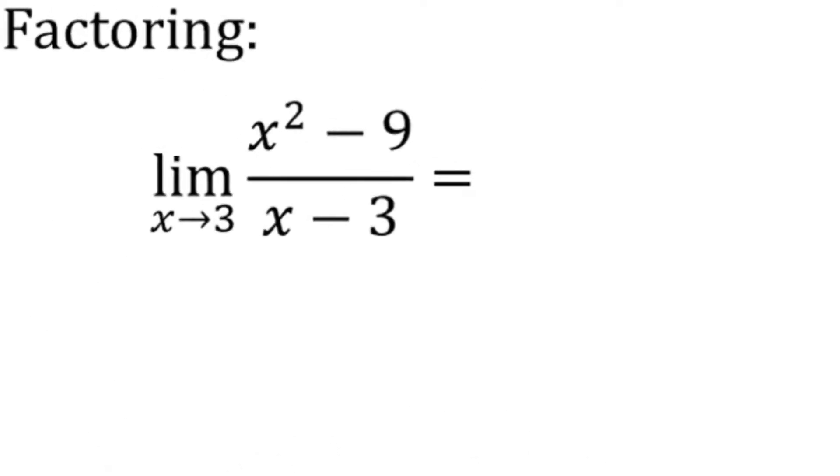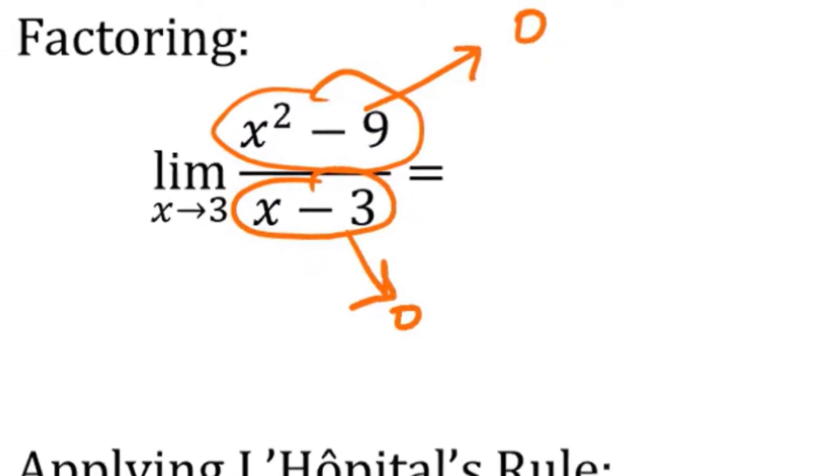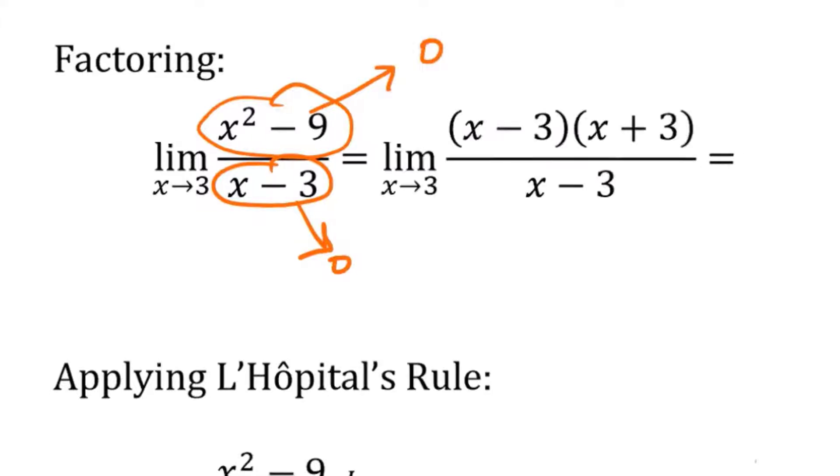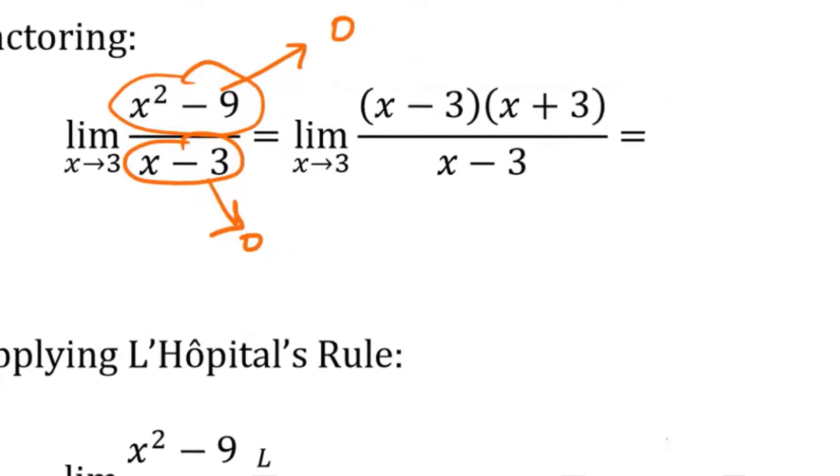We would have plugged in 3 and we would see that we get 0 and 0. And 0 over 0 is one of the indeterminate forms. So we would try factoring. So we get the limit as x approaches 3 of x minus 3 times x plus 3 over x minus 3.